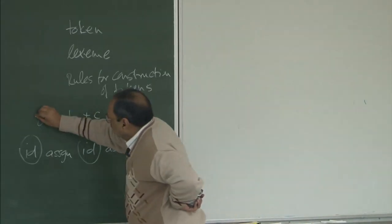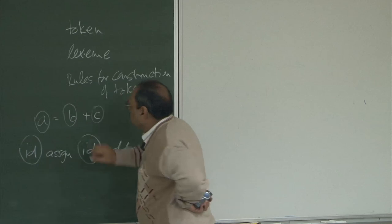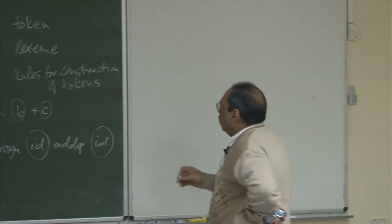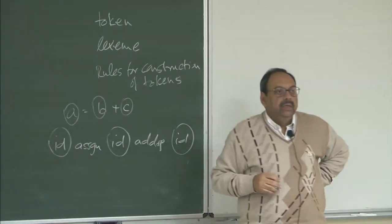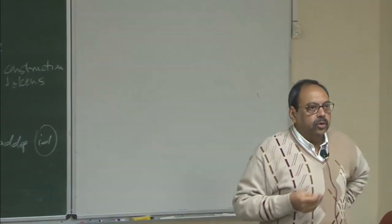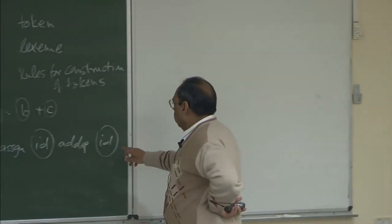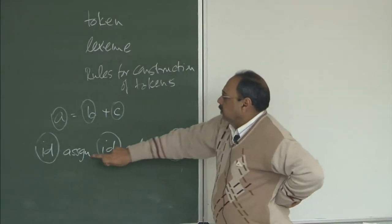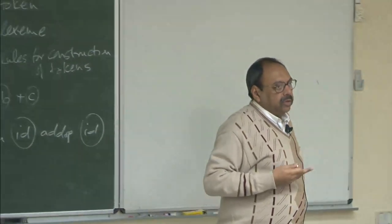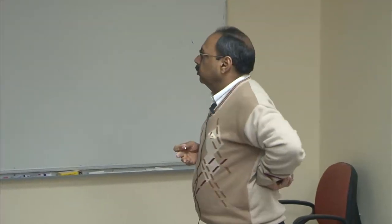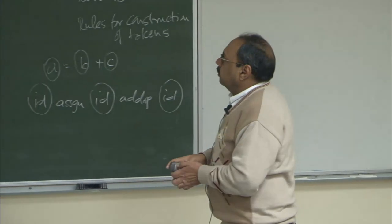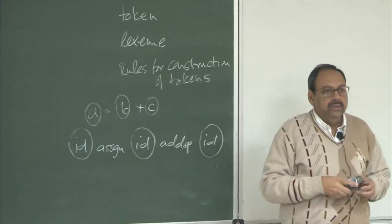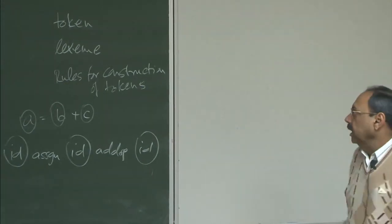If I look at the actual strings in the source — the variable names and operator symbols — these are really the lexemes which are associated with these tokens. Tokens are this class which we pass on to the syntax analyzer; associated with each of these entities is a string which we call lexemes. Then we have rules which say how these tokens are going to get constructed. A sentence consists of a string of tokens, which is really a syntactic category — for example, identifier is a syntactic category.